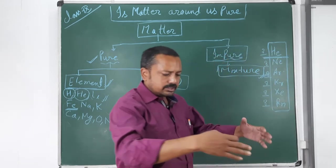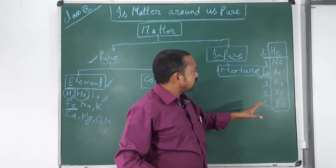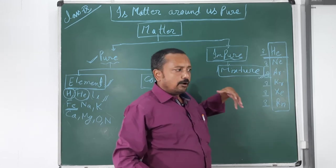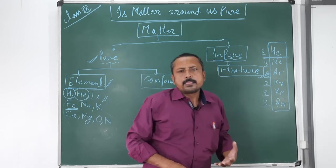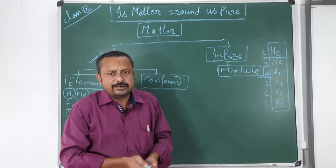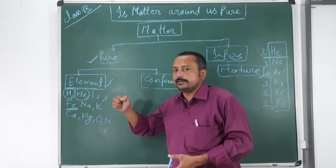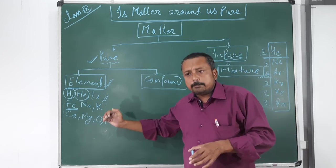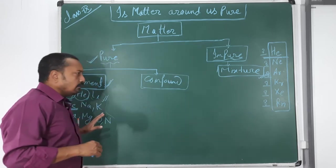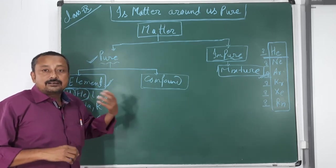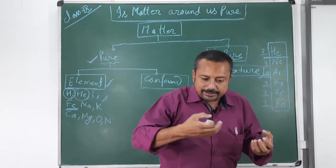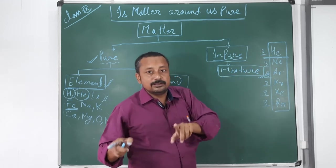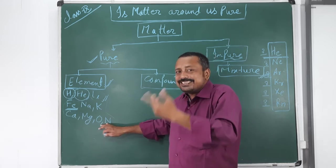Since inert gases have complete octets, they are stable and have no reactivity. For other elements in the periodic table, the octet is not complete, so they want to complete their octet to become stable. To complete the octet, an atom either gains electrons, loses electrons, or shares electrons. By any of these means, atoms want to complete their octet or duplet and become stable.